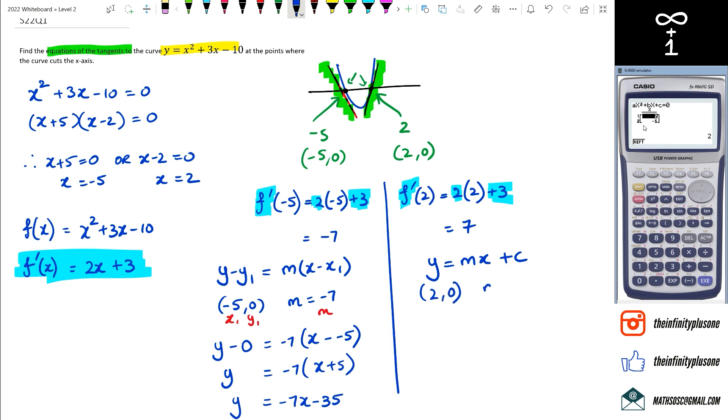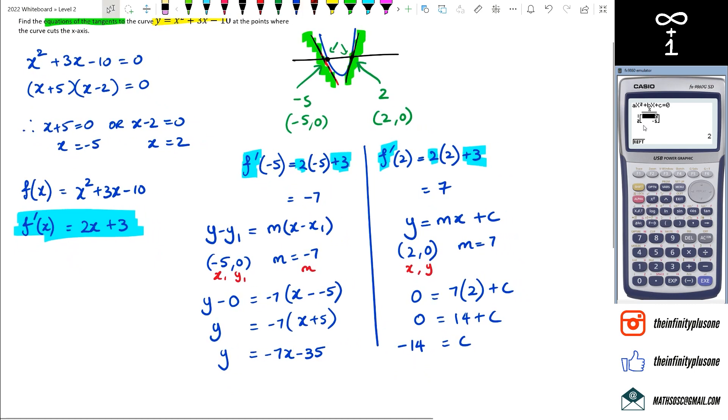But when we're doing the y equals mx plus c method, this is x, and this is y. So then what we've got here is 0 is equal to 7 times 2 plus c. So then 0 is equal to 14 plus c. So we can say that c is equal to negative 14. So with that in mind, the second equation, you can write it as y equals 7x minus 14.